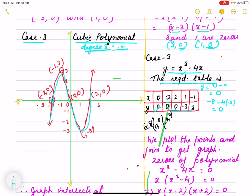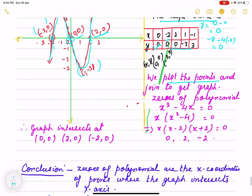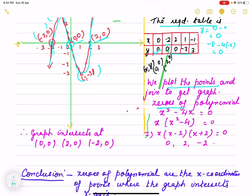Then we see that it intersects at 3 points. It is minus 2, 0, then 0, 0 and 2, 0. So we plot the coordinates also when you are doing this activity. We plot the points and join to get the graph. And when we find zeros of polynomial, we equate it to 0.